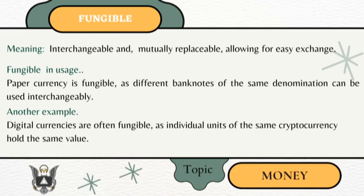Fungible — meaning interchangeable and mutually replaceable, allowing for easy exchange. Paper currency is fungible, as different bank notes of the same denomination can be used interchangeably. Digital currencies are often fungible, as individual units of the same cryptocurrency hold the same value.